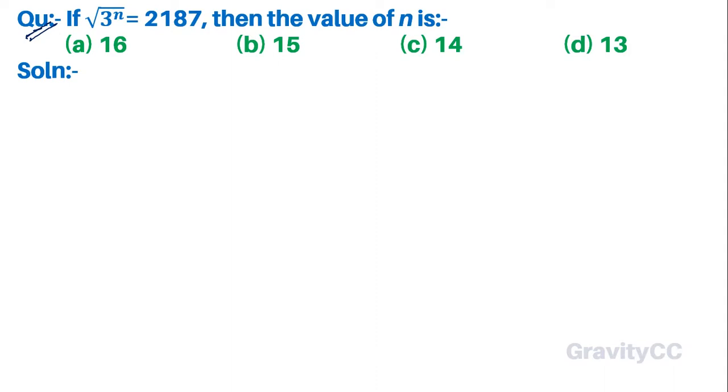Question: If root under 3 to the power n is equal to 2187, then the value of n is. In this question, given that 3 to the power n equals 2187.